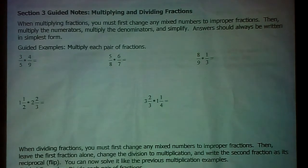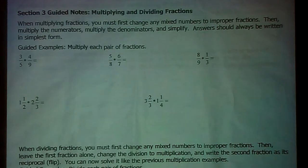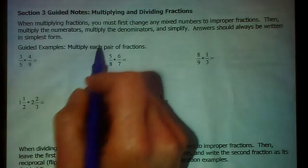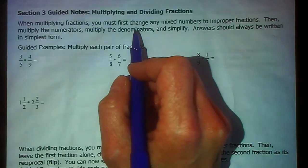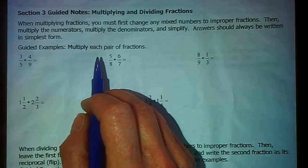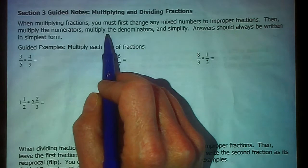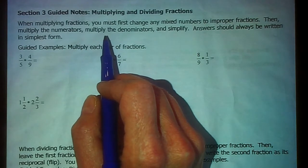Alright, we are now moving on to section 3, multiplying and dividing fractions. When you multiply fractions, you first need to change any mixed numbers to improper fractions. Then all you do is multiply. You multiply the numerators, you multiply the denominators, and simplify.